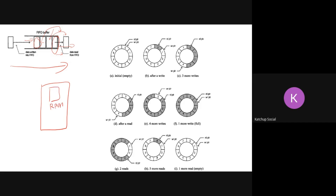You will have a pointer pointing to where the next data should be written. There are two pointers: read_pointer and write_pointer. The read pointer decides from where you are going to read next data, and the write pointer decides where you are going to write next data. Initially, when nothing has been written, the FIFO is empty, so both read pointer and write pointer are zero.